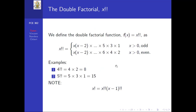Next, there is what we call the double factorial, denoted by !! (double exclamation). The double factorial of x is defined by two formulas: when x is an odd natural number, x!! = x times (x-2) times ... times 3 times 1; and when x is an even natural number, x!! = x times (x-2) times ... times 4 times 2.